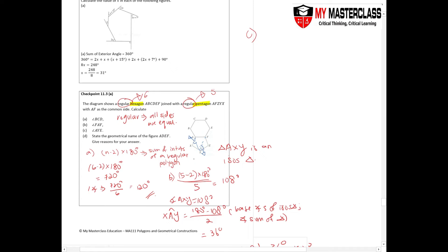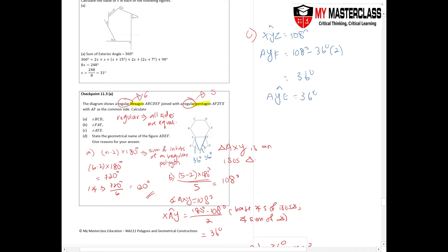Drawing a straight line to clarify: both base angles of the isosceles triangles are 36° each. The full angle XYZ on its own is 108°. So angle AYF = 108° − 2 × 36° = 36°. Connecting directly, angle AYE = 36°.